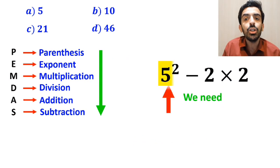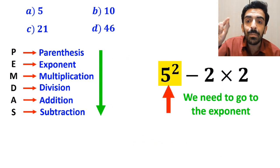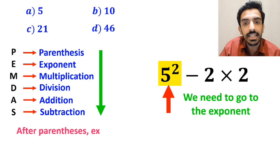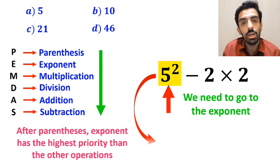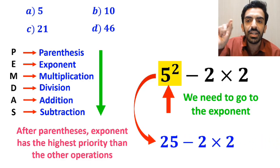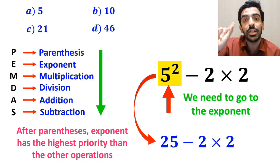In the next step, we need to go to the exponent, because in the PEMDAS rule, after parenthesis, exponent has the highest priority than the other operations. So, this expression simplifies to 25 minus 2, then multiply by 2.